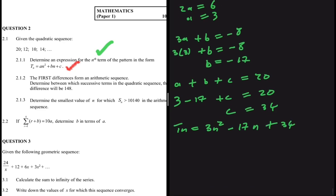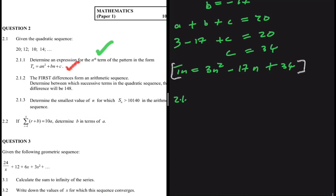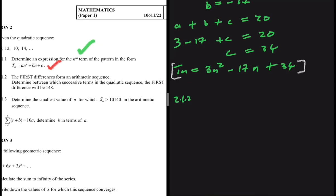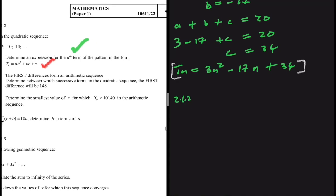And just like that we have the solution to 2.1.1. Now let's look at 2.1.2: the first differences form an arithmetic sequence. That is true and always true — the first differences of a quadratic sequence will always give you an arithmetic sequence.